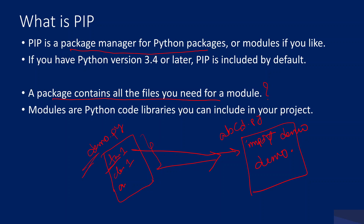Once you do that, you can use 'demo.function_one()' to call that function. Similarly, if you want to create an object for class_one, you can say 'demo.class_one()' and save the object into a variable called x. We have already discussed this in our past videos.